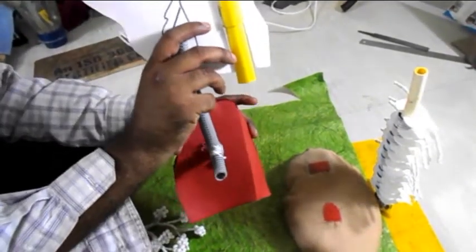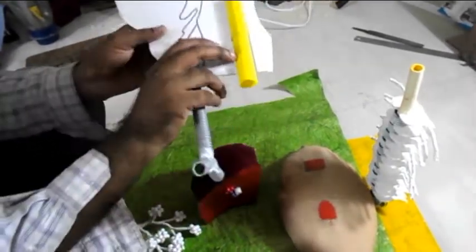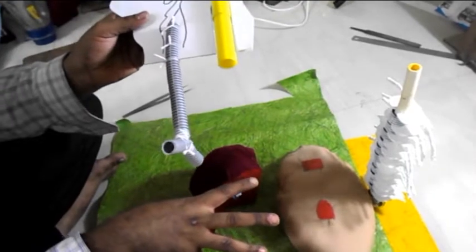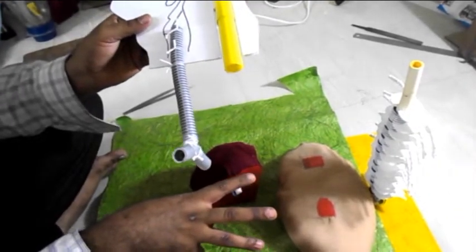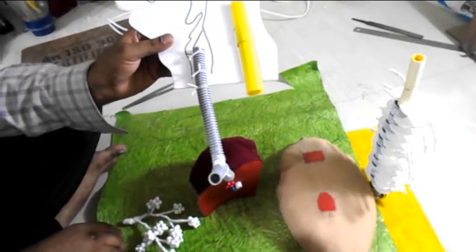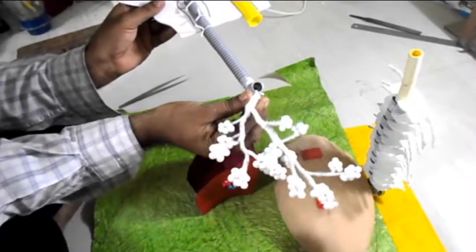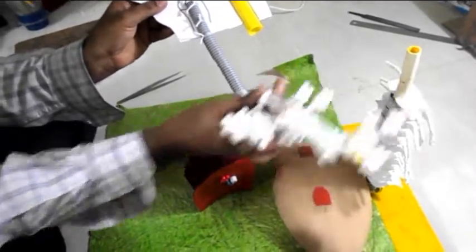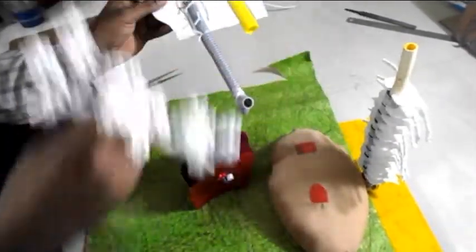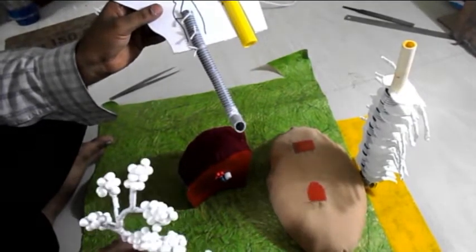It connects to the lungs, and then further it divides into three branches called bronchioli. And this is one of the bronchioli, and this branches with three pieces like this and fills the complete cavity of the lungs.